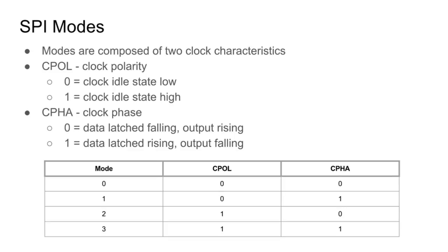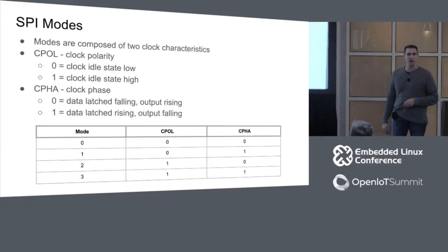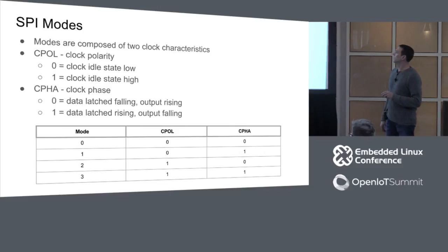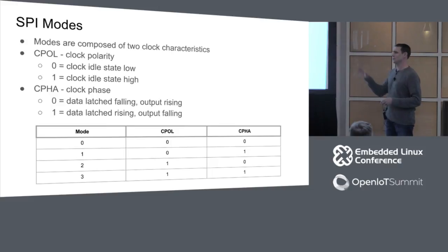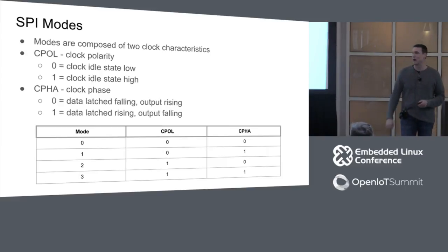Now we need to understand SPI modes. It's essentially clock polarity and phase of the clock relative to where we're latching the data. When clock polarity has an idle state low, that's CPOL=0; if idle state is high, that's CPOL=1. Clock phase: CPHA=0 means data is latched on falling and output on rising; CPHA=1 means data is latched on rising, output on falling. Mode numbers are a simple binary mapping in this table — modes 0, 1, 2, 3.